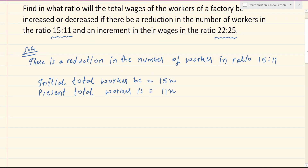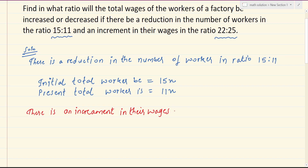Now the next step is wages. The ratio of wages is 22 is to 25. There is an increment in their wages in the ratio 22 is to 25.